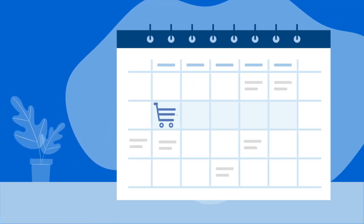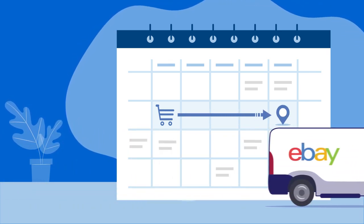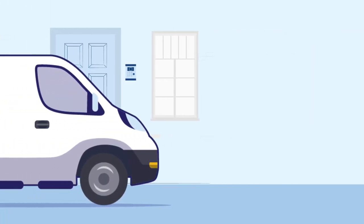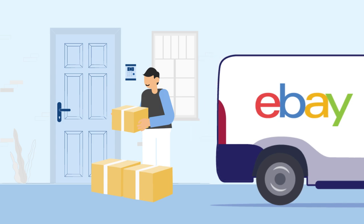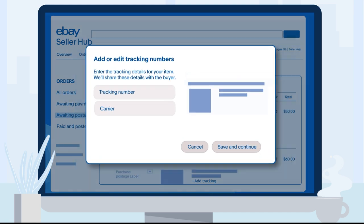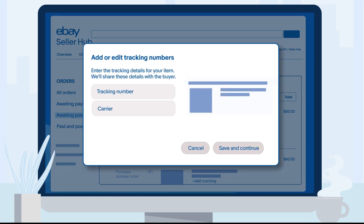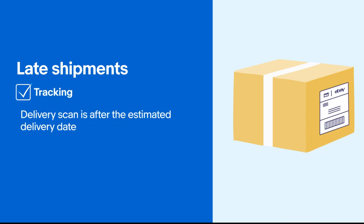Finally, let's look at the late shipment rate. We help set buyers' expectations by showing them an estimated delivery date for their order. To help ensure items arrive on time, you need to send items within your stated handling time using the delivery service chosen by the buyer. Late shipments are determined based on whether you've uploaded valid tracking information from an integrated carrier. For items with valid tracking, an item is considered late if the delivery scan occurs after the estimated delivery date and there is no carrier scan within your handling time.